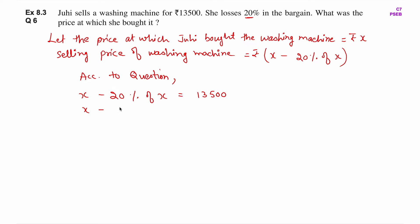अब इसको solve करते हैं. X minus 20% of X — percentage का symbol 1 upon 100 में change होता है, of मतलब multiplication. So यहाँ पर आएगा X minus 20/100 of X equals to 13,500. 20/100 simplify होकर 1/5 बनता है, so यह बनेगा X minus X upon 5 equals to 13,500.